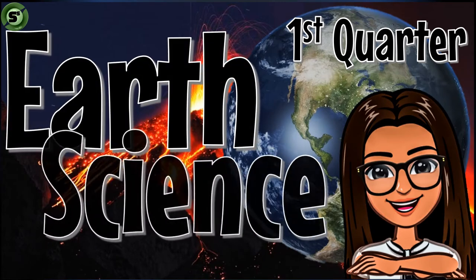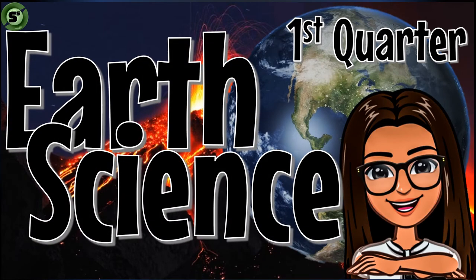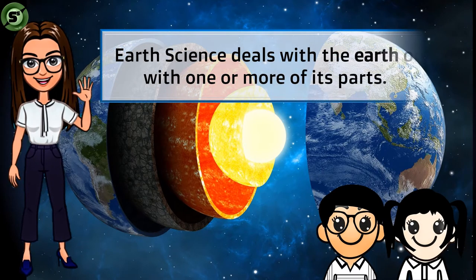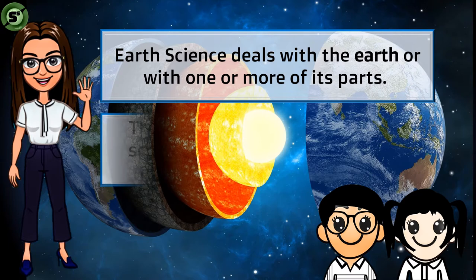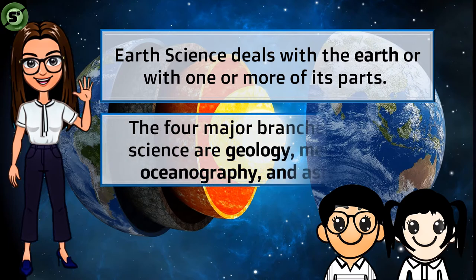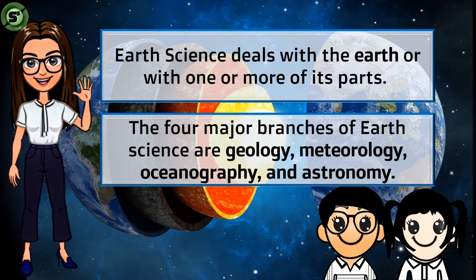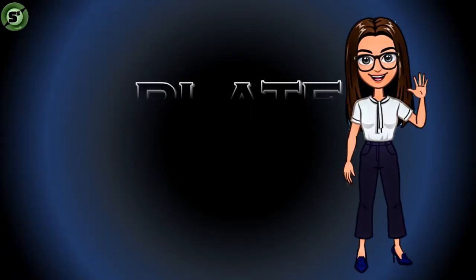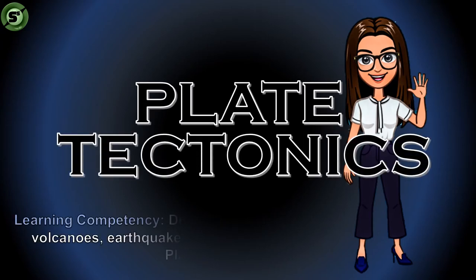At this point, let's start our first quarter studying earth science. Do you have any idea about earth science? Earth science deals with the earth or with one or more of its parts. The four major branches of earth science are geology, meteorology, oceanography, and astronomy. Geology deals with the activity and mechanism of the earth; meteorology studies about the weather; oceanography focuses on the behavior of the ocean; and astronomy studies the celestial objects and phenomena.